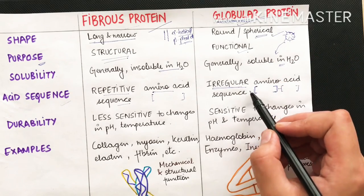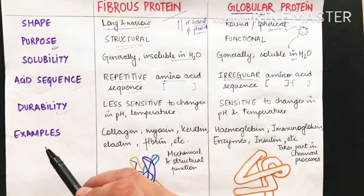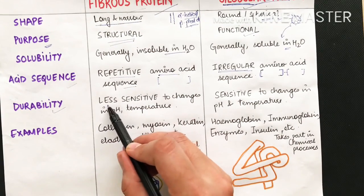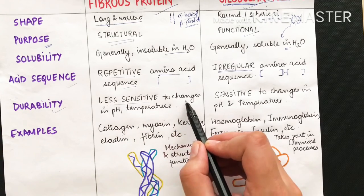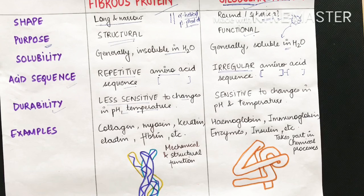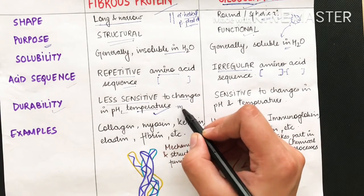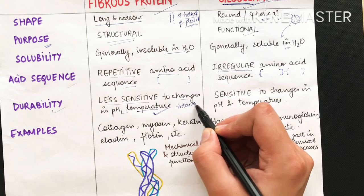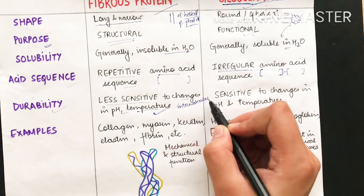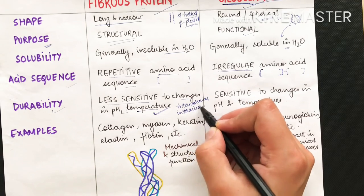Globular proteins have no repetitive amino acid unit — they have a random polypeptide chain intertwined into a spherical structure. Regarding durability, fibrous proteins are less sensitive to changes in pH and temperature, meaning pH or temperature changes don't affect them much. This is because they are very stable proteins with very strong intermolecular interactions.